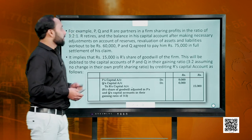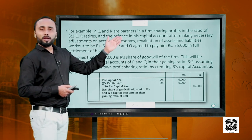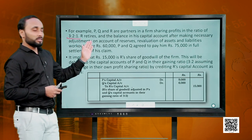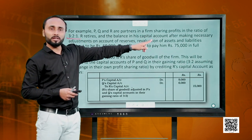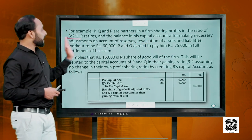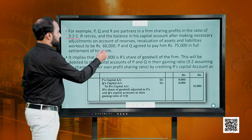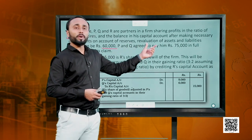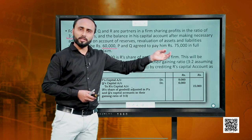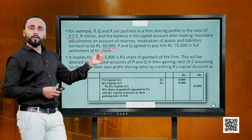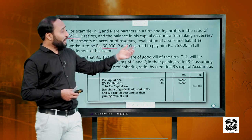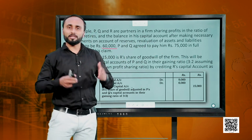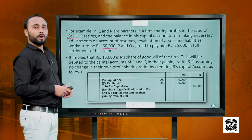Let us look at an example. P, Q and R are partners sharing profits in the ratio of 3:2:1. R retires and the balance in his capital account after making all adjustments is 60,000. But P and Q agreed to pay him 75,000. The balance due was 60,000 but he is being paid 75,000 — this extra 15,000 is obviously the goodwill being paid to the partner.